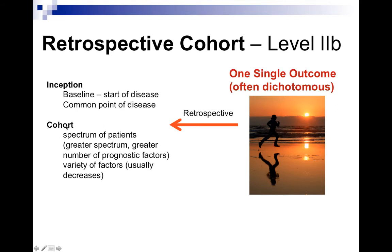The same rules apply in that we'd like a large variety of patients across a broad spectrum of the disease. However, this is where the issue usually comes in: because we have to select patients from a database using specific criteria, we frequently don't achieve a spectrum that's sufficient to consider the number of prognostic factors that really impact or modulate the variety of prognostic factors we're interested in.